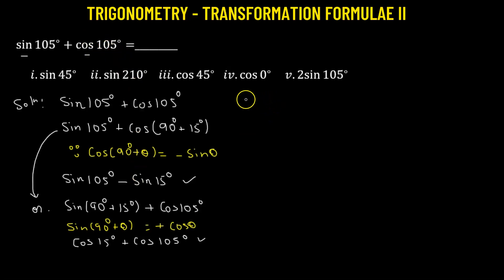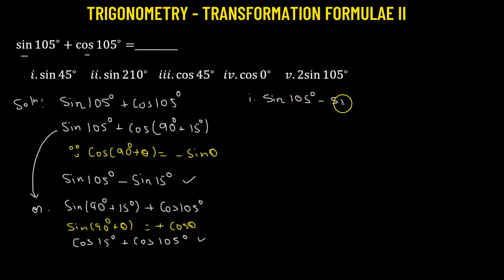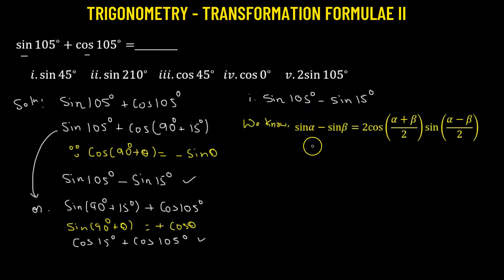Let's do both of them. Starting with part one: sine 105 degrees minus sine 15 degrees. We'll be using the transformation formula for the difference of two sine functions, which states: sin α − sin β = 2 cos((α + β)/2) · sin((α − β)/2).